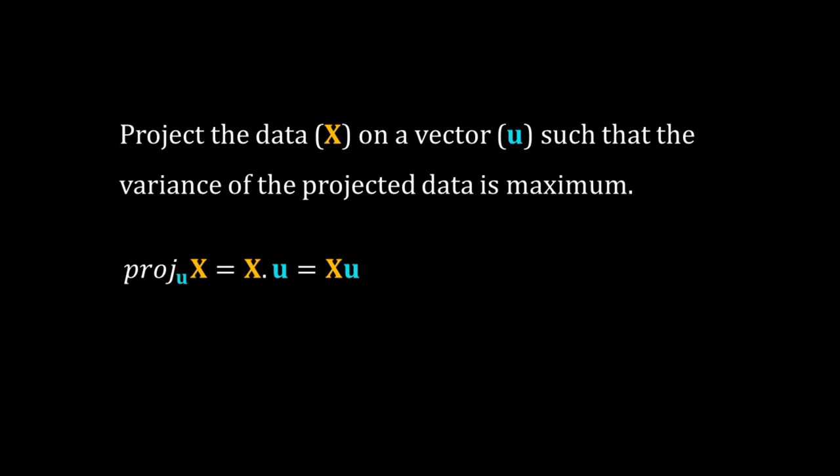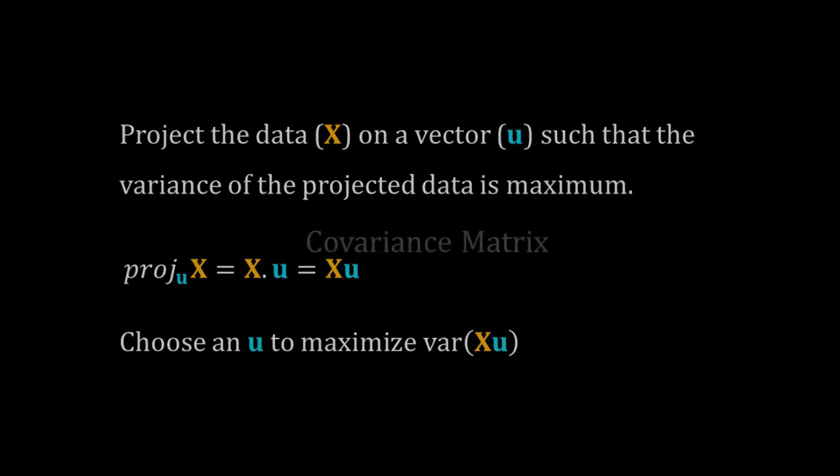Our projected data is X times u. So what I am asking you to do is that choose a u that maximizes the variance of X times u. You know how to calculate the variance of a random variable. But here we have matrix and vectors and we are calculating the variance. So I will discuss how to get the variance of XU. But first we will learn about covariance.